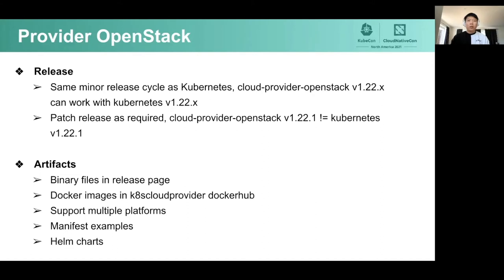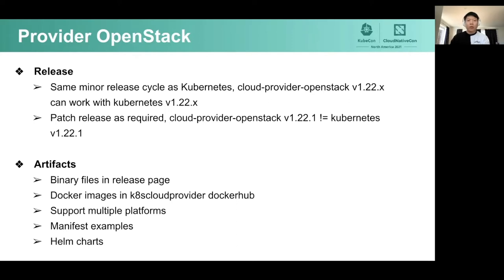The release of Provider OpenStack is in the same cadence as Kubernetes. For example, Kubernetes v1.22 was released several weeks ago and we released the same version of Cloud Provider OpenStack days after. We have CI jobs running to ensure that one version of OpenStack Cloud Controller Manager can talk to the latest three minor versions of Kubernetes. We do not follow the patch release cadence of Kubernetes — we only do patch releases as required, especially when there is a critical bug fix to backport.